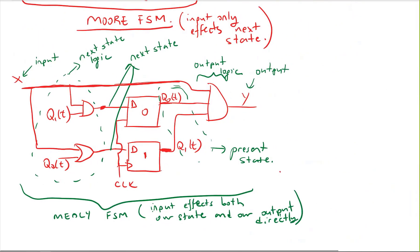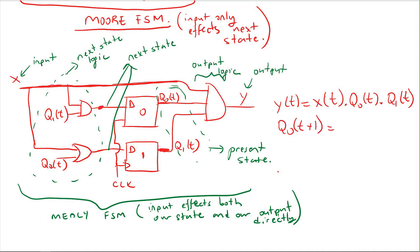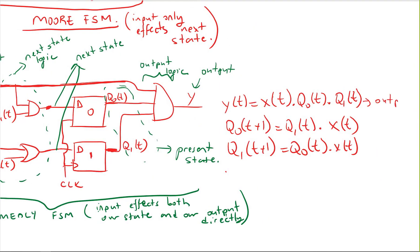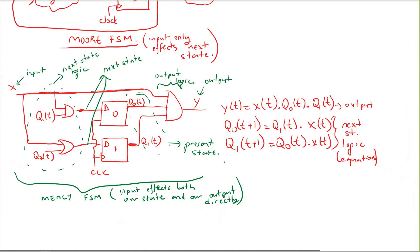Let's write the functions for this finite state machine. The output logic is: y(t) = x(t) AND q0(t) AND q1(t). For the next state equations: q0(t+1) = q1(t) AND x(t), and q1(t+1) = q0(t) AND x(t). These are the next state equations and the output equation, derived by looking at the schematic.